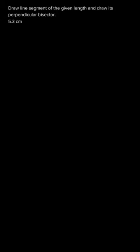Hello everyone. In this question we have to draw a line segment of length 5.3 centimeters and also draw its perpendicular bisector. So first of all I will draw the line segment of length 5.3 centimeters and I am naming the line segment as AB.